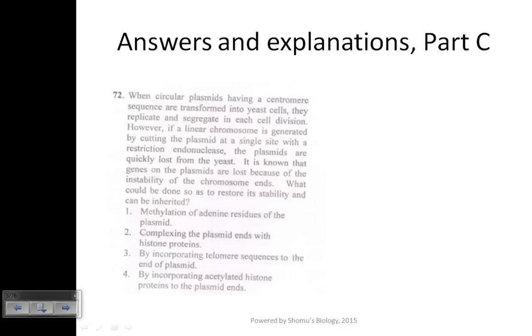Question number 72: When circular plasmids having a centromere sequence are transformed into yeast cells, they replicate and segregate in each cell division. However, if a linear chromosome is generated by cutting the plasmid at a single site with a restriction endonuclease, the plasmids are quickly lost from the yeast.